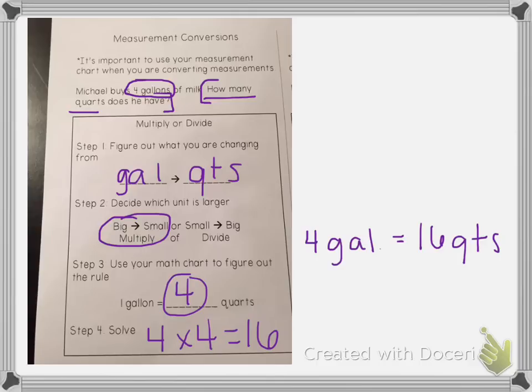So again this way is a little bit more confusing at first but it's faster because you don't have to make a table. Basically what you're doing is you're figuring out what would the rule be for the table. If we're going to a smaller unit we're going to be multiplying because we need a bigger number. If we're going to a bigger unit then we're going to be dividing because we need a smaller number. And then you take the number you're starting with and use your chart to figure out what to multiply by or divide by.